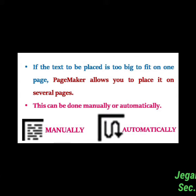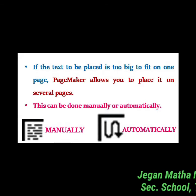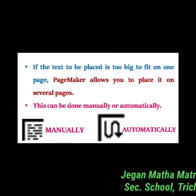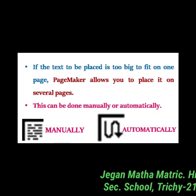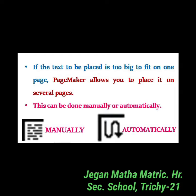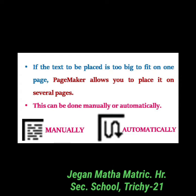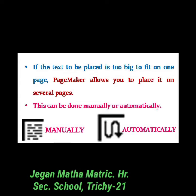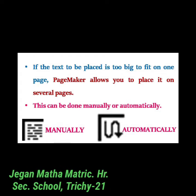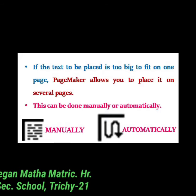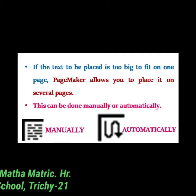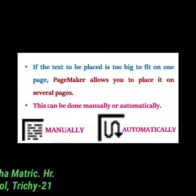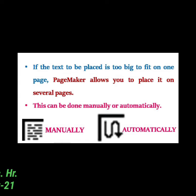If the text to be placed is too big to fit on a page, PageMaker allows you to place it on several pages, either manually or automatically. For the manual text flow method: position the loaded text icon at a corner of the area where you want to place the text, hold down the mouse button and drag to define the text block, then release. The text flows into the defined area. If there is more text than fits, a red triangle appears in the bottom window handle — click it and the loaded text icon reappears. Generate a new text block and repeat the process until all text is placed.